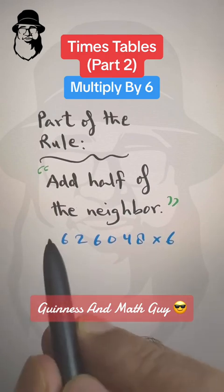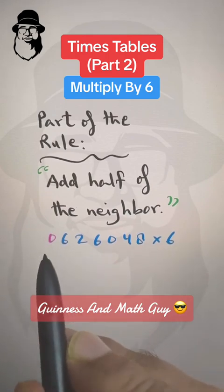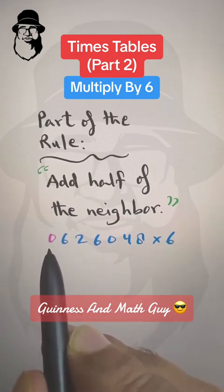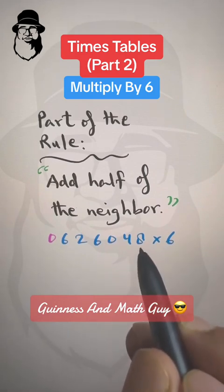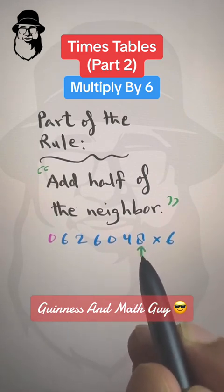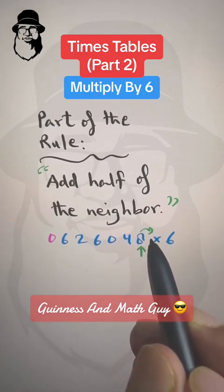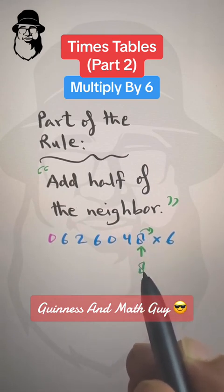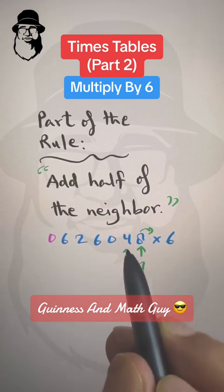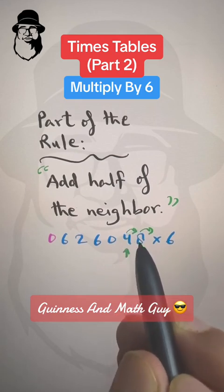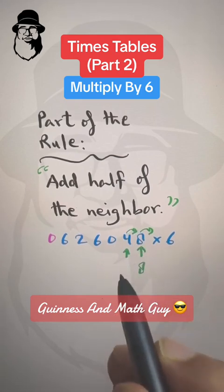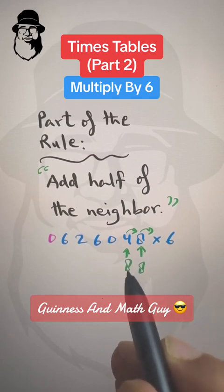We put a 0 here on the right, or we can just think in our mind that there is a 0 here. We start at the rightmost digit. Half of the neighbor here: 8 plus nothing is still 8, so we write 8. Now we are at the next digit: 4 plus half of the neighbor, which is half of 8, that is 4. So 4 plus 4 is 8. We write 8.